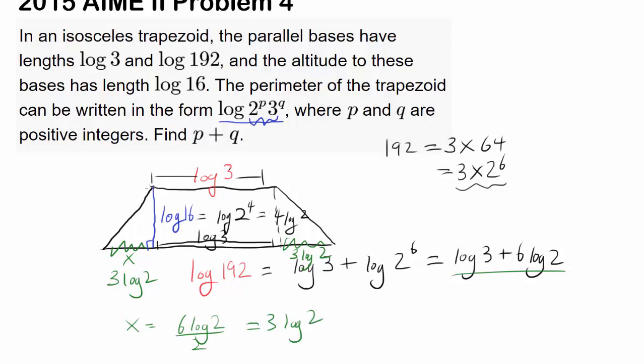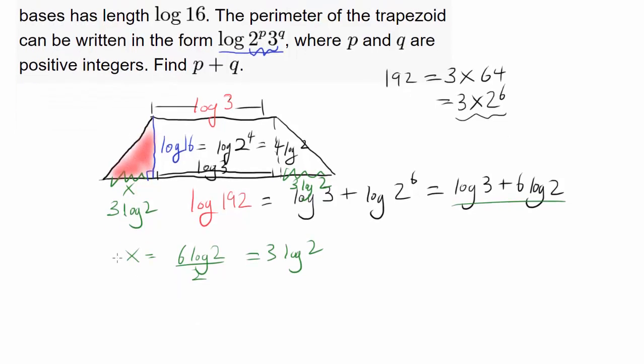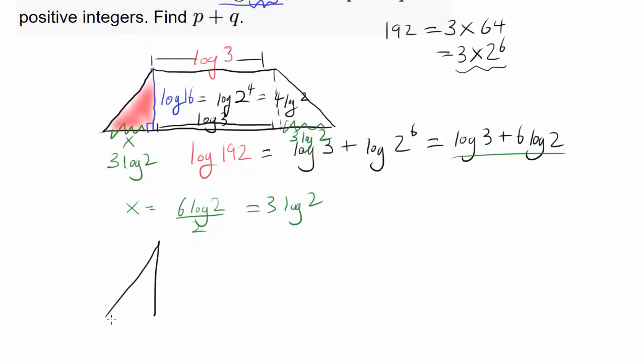Now let's focus on this right triangle. We have 3 log 2 on one leg and log 16, or 4 log 2, on the other leg. We can find the hypotenuse. This is a 3-4-5 triangle.